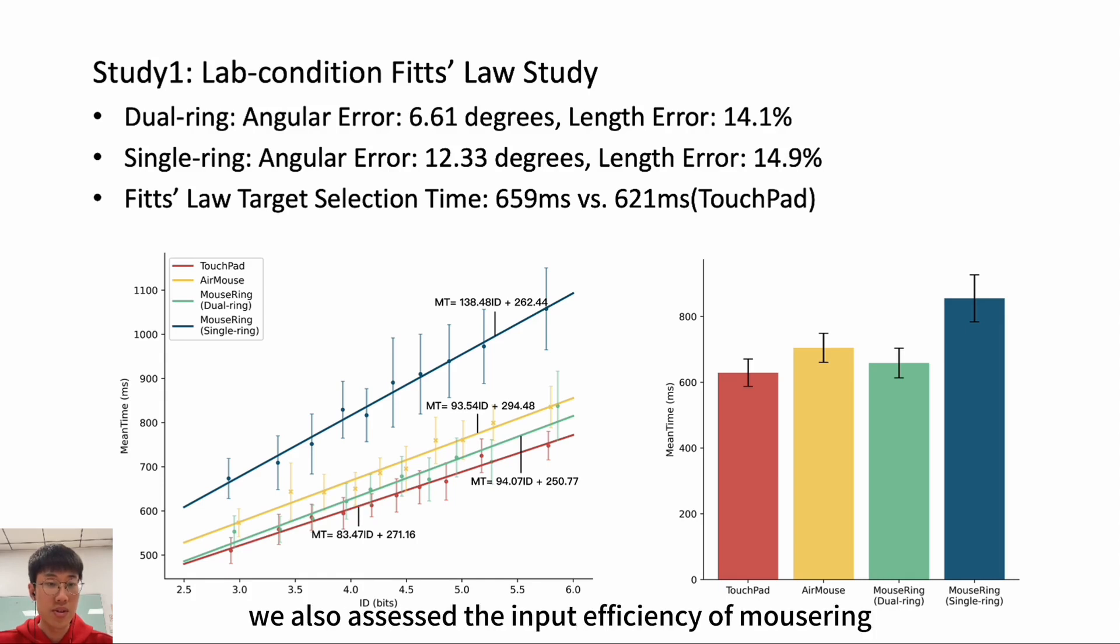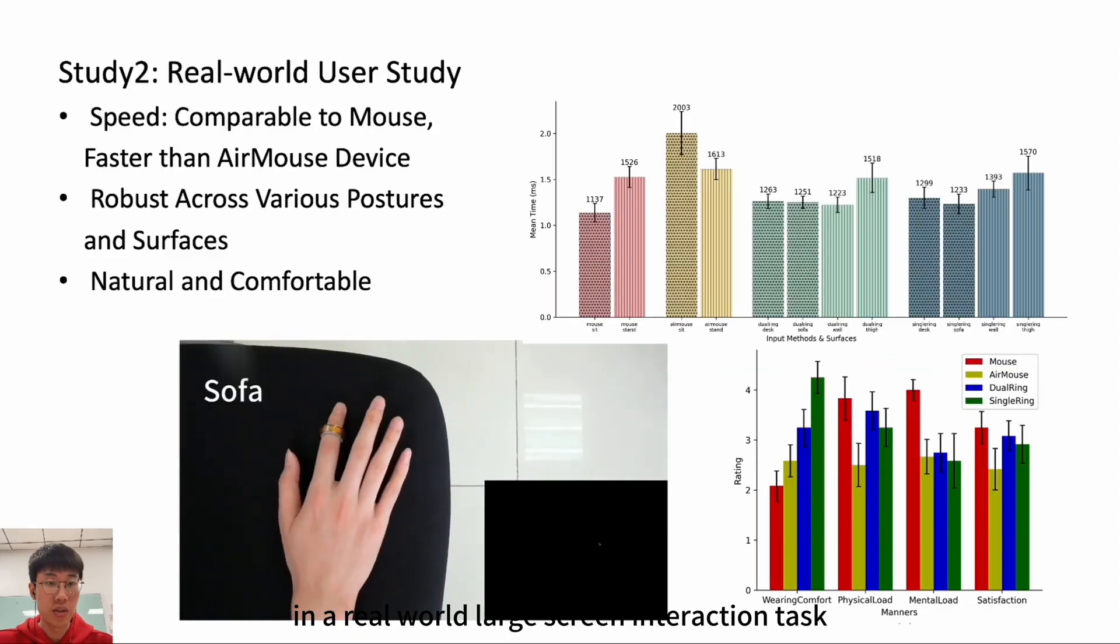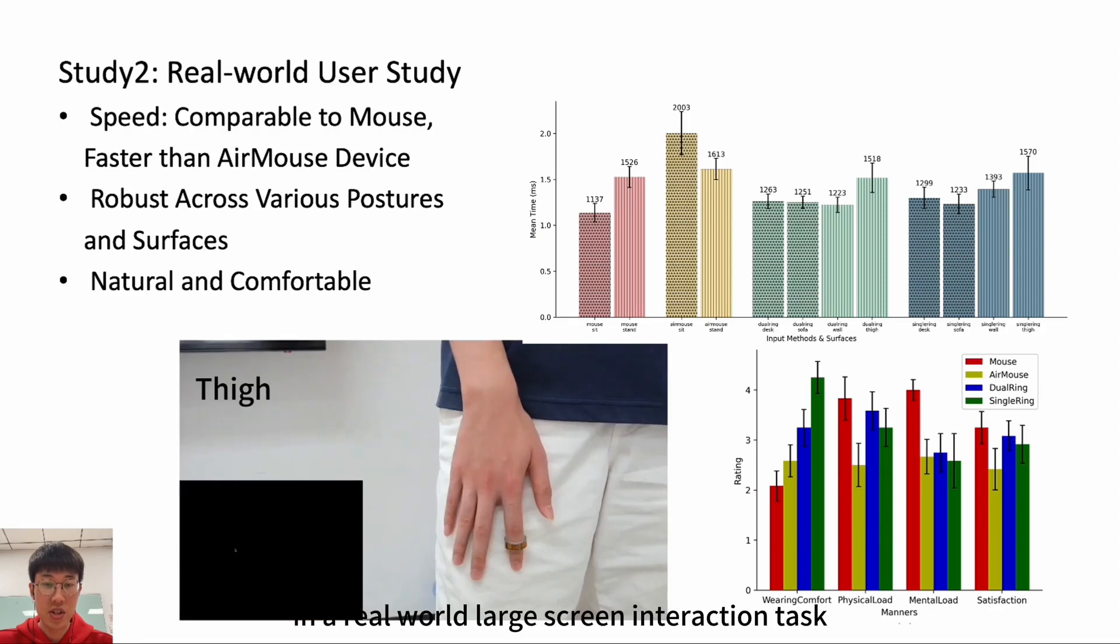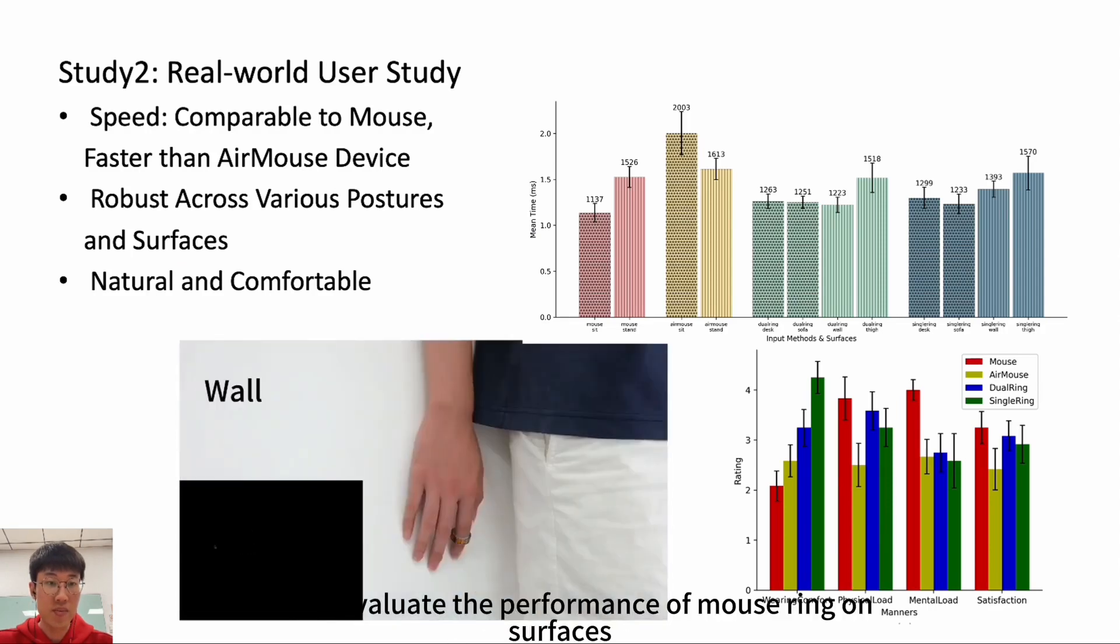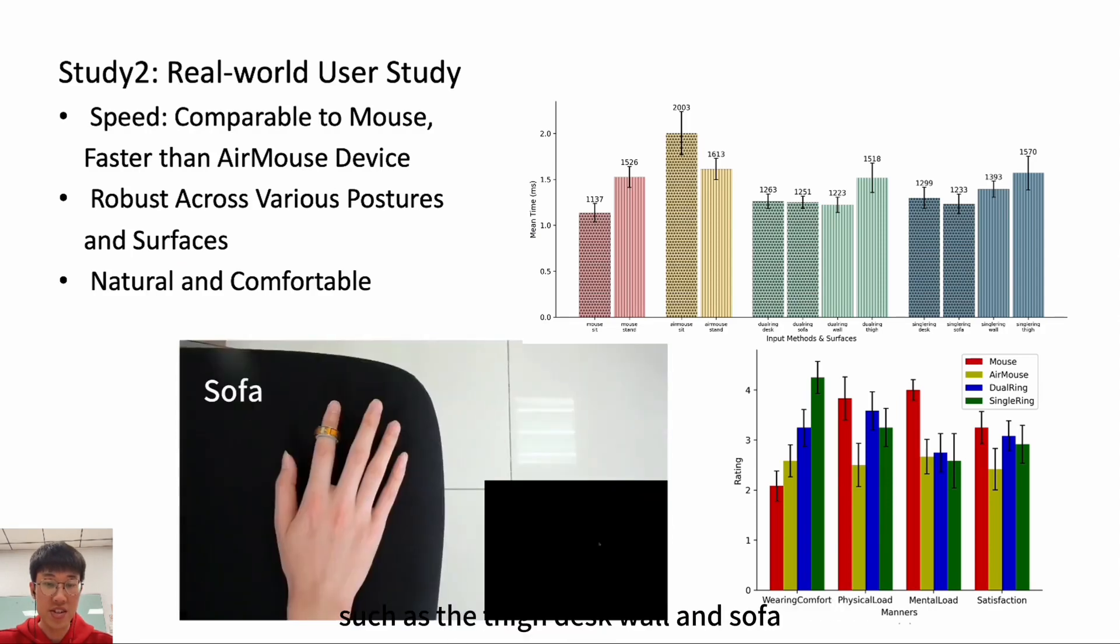We also assessed the input efficiency of MouseRing in both controlled laboratory settings and real-world scenarios. In a Fitts' law study, we utilized the touchpad and the existing always-available pointing device, AirMouse, as the baseline. The dual MouseRing achieved input efficiency comparable to laptop touchpads and significantly outperformed the AirMouse.